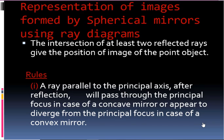The representation of images formed by spherical mirrors is done using ray diagrams. When an image is formed with the help of a spherical mirror, those images can be represented using ray diagrams. The intersection of at least two reflected rays gives the position of the image of a point object. So, at least two rays must be selected so that the reflected rays meet at a certain point, and at that point the image is formed.